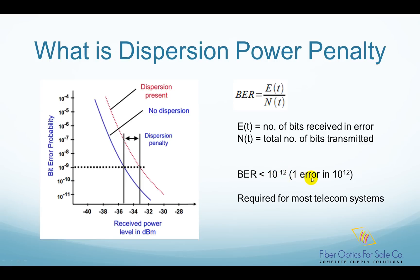This means less than one error bit in every 10 to the power of 12 bits transmitted. Fiber dispersion causes pulse broadening. It also causes adjacent pulses to interfere with one another, which is called inter-symbol interference, ISI.